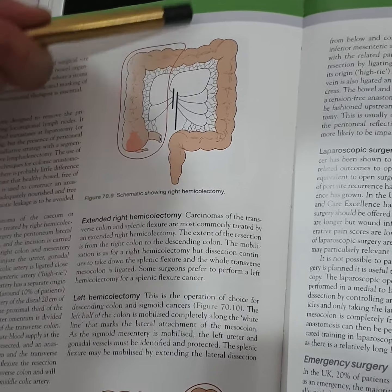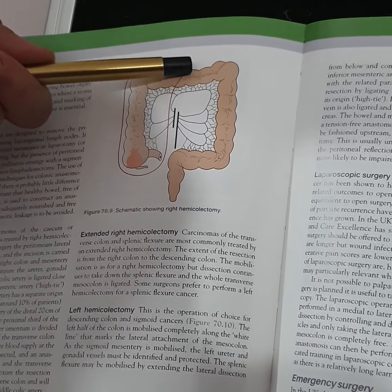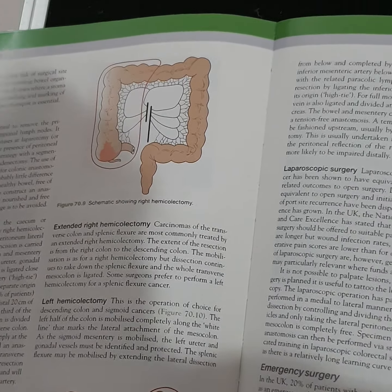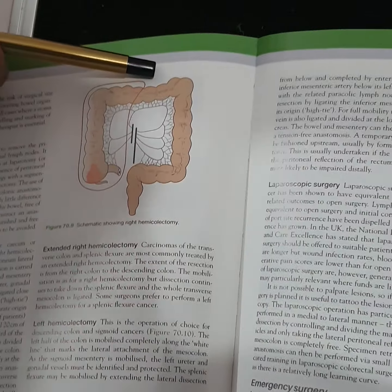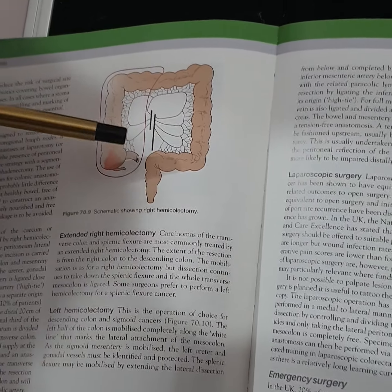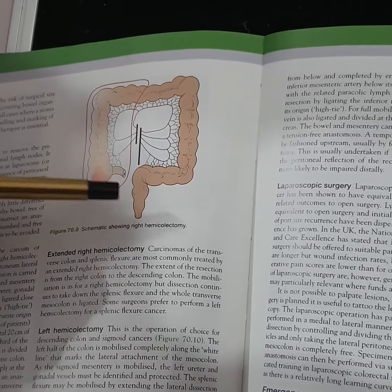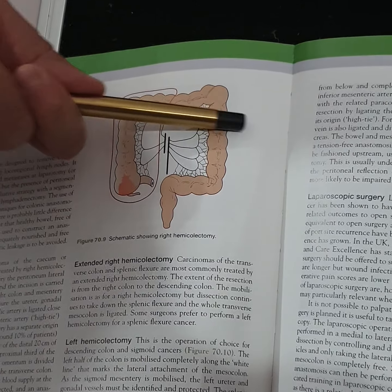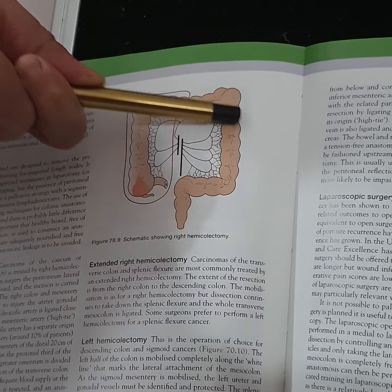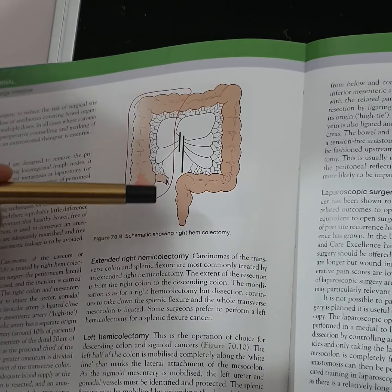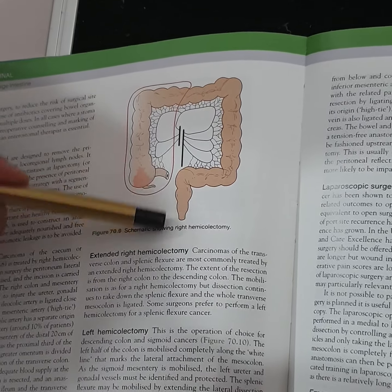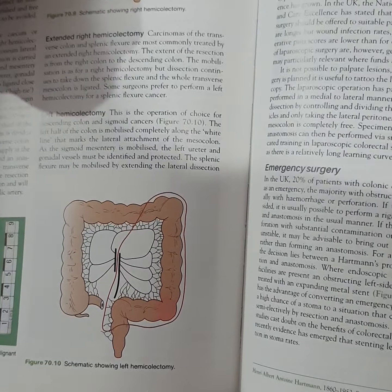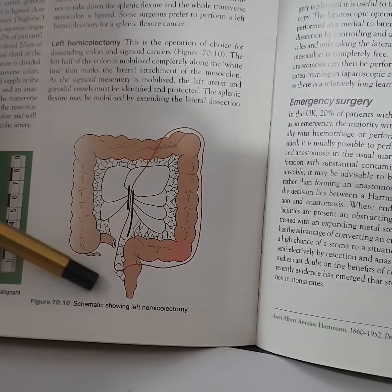For lesions in the hepatic flexure or proximal transverse colon, an extended right hemicolectomy is performed, ligating the middle colic at its base. For splenic flexure tumors, extended right hemicolectomy removes 10 cm of ileum, cecum, ascending colon, hepatic flexure, whole transverse colon, and 5 cm distal to the tumor in the descending colon, followed by ileo-descending anastomosis.